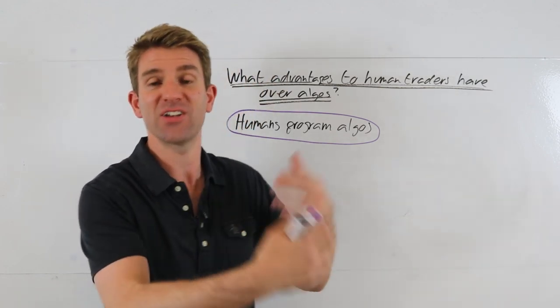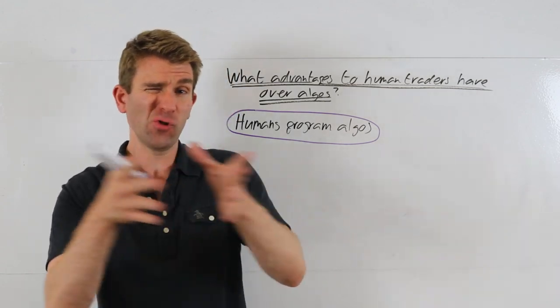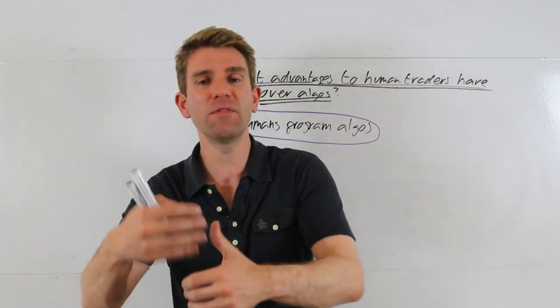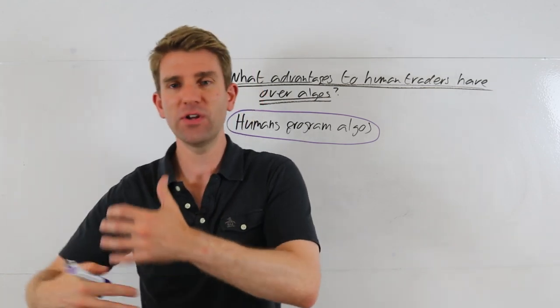So you've got an algo that in its kind of really simplistic form is like executing this way, but if we go to the full complex algo there's still something which we're saying to it: go and find out.